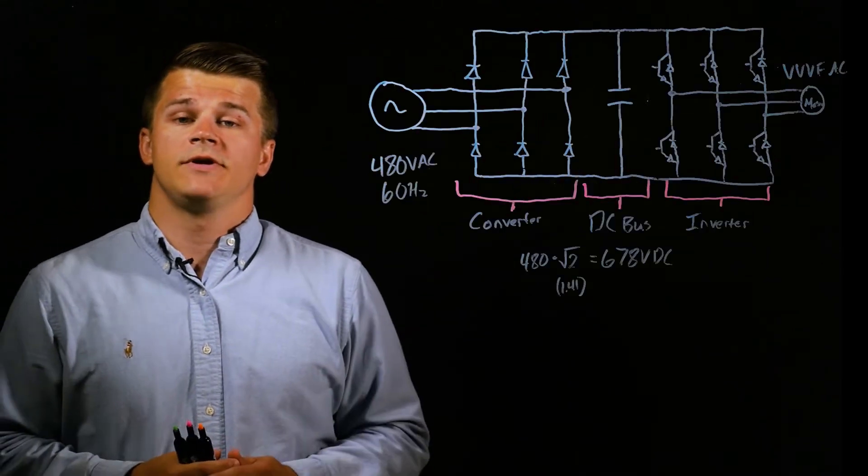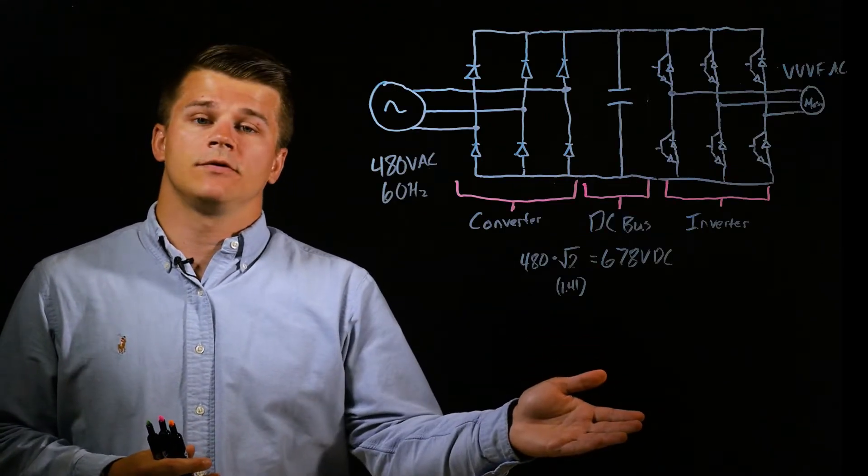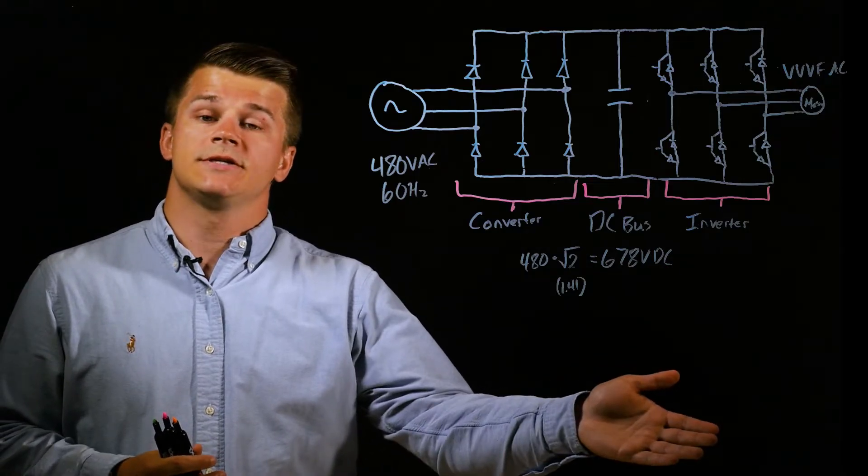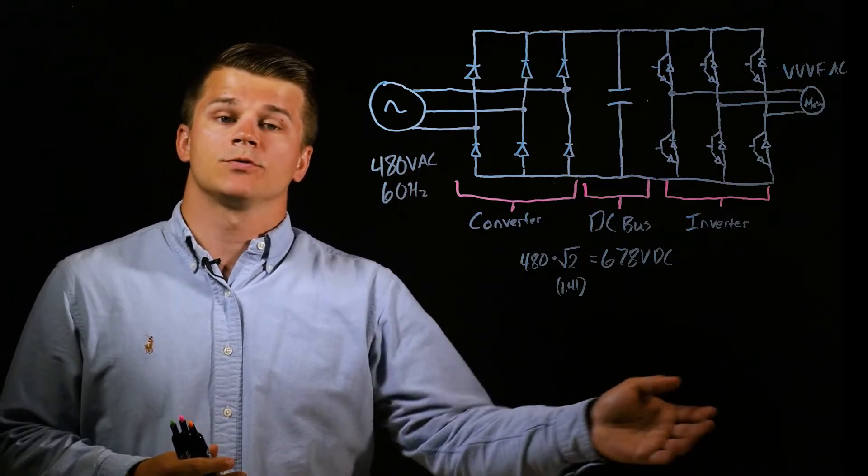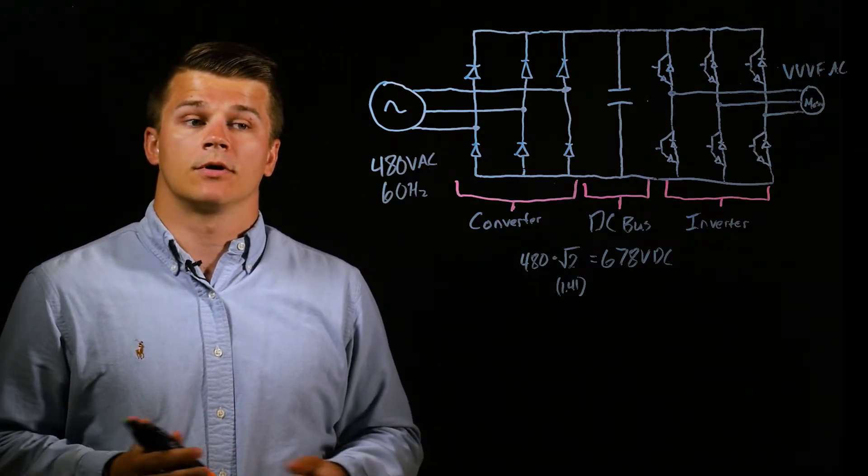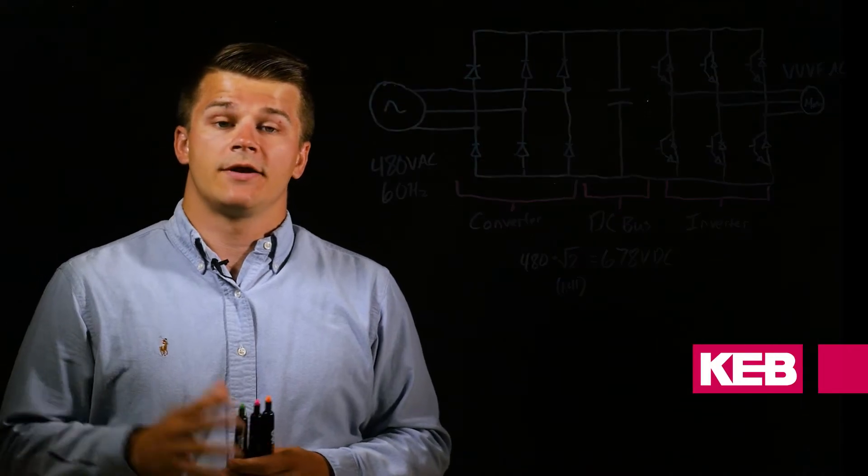In our last video we talked about the basics of a VFD and how it takes a 480 volt input to the drive in the converter section, rectifies it up to a DC bus voltage, and then uses pulse width modulation in the output section to produce a variable voltage, variable frequency output to the motor. You can find more details on that in our last video.